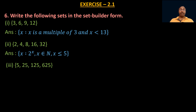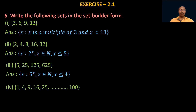Third: {5, 25, 125, 625}. Similarly, 5 = 5¹, 25 = 5², 125 = 5³, 625 = 5⁴. So the set builder form is: {x : x = 5ⁿ, where n ∈ N and n ≤ 4}. Fourth: {1, 4, 9, 16, 25, …, 100}. These are perfect squares — 1², 2², 3², up to 10². So the set builder form is: {x : x = n², where n ∈ N and n ≤ 10}.